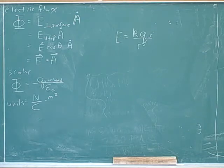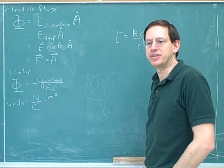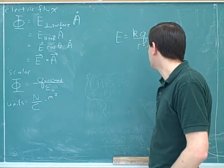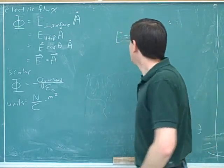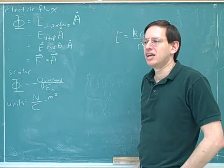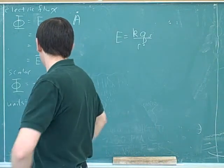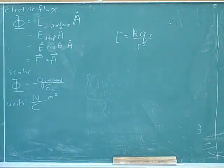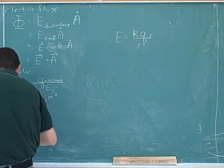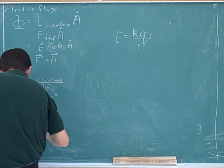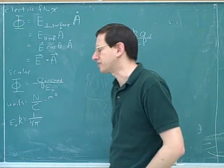This is called the permittivity constant. We talked last week about how unfortunately your textbook forgot to put k in that inside cover, so you might want to write in what k is — about 9 times 10 to the ninth, plus some complicated units. It turns out that epsilon zero and k are used in very similar situations; they basically indicate the same kind of thing. So there's a relationship between epsilon zero and k: epsilon zero times k equals 1 over 4 pi.